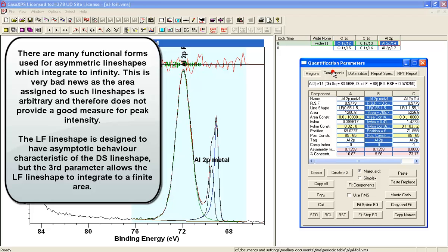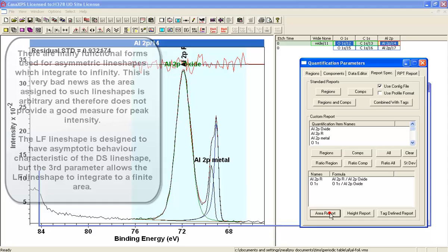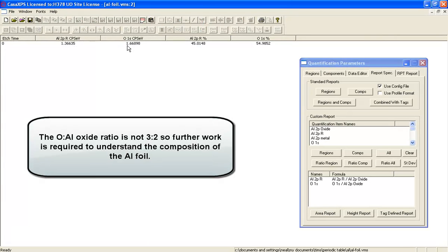So having done this, let us go back to the custom report and let's re-evaluate what we've got here. And now that's interesting because having improved the quality of the fit, we now have got the value apparently getting worse. So it's 1.66. We're expecting 1.5.